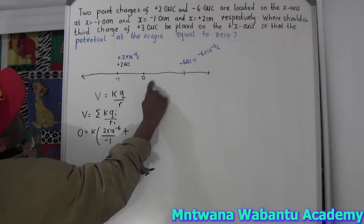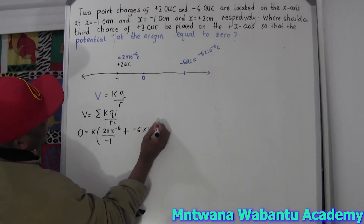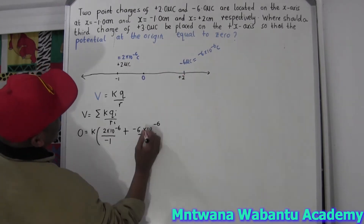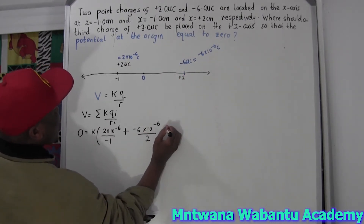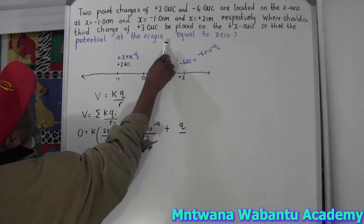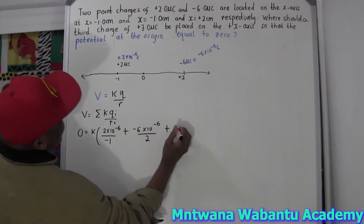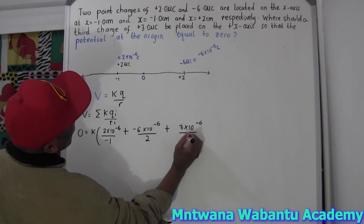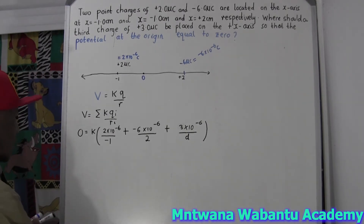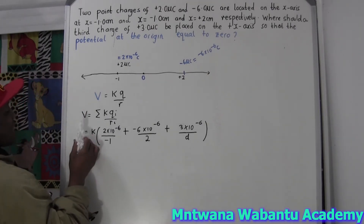The second charge is negative six times ten to the negative six over its distance, which is two units. For the third charge, we know it is Q_3 times ten to the negative six, but we don't know its distance — so let's call it d. We set the whole expression equal to zero and solve for d.